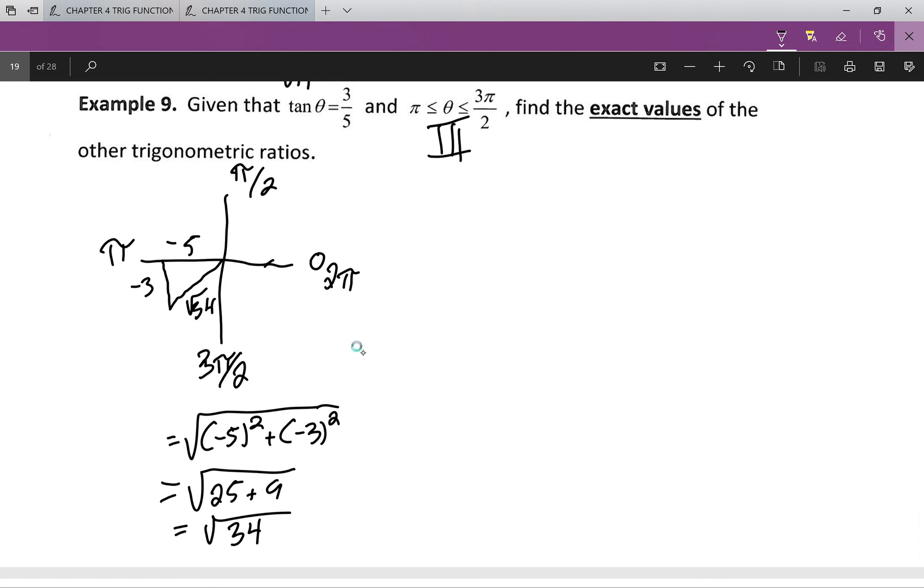So now I have my sine theta, my cos theta, my tan theta, as well I have my cosecant theta, my secant theta, and my cotan theta. From here, sine theta is opposite over hypotenuse, which will give me negative 3 over root 34.